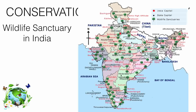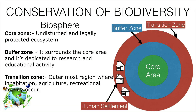A biosphere reserve has three main zones. The core area is an undisturbed and legally protected ecosystem where nobody is allowed. The buffer zone is where human beings can interact with animals and plants and is dedicated to research and educational activities. The transition zone is where human habitation, agriculture, recreation, and other activities are allowed.